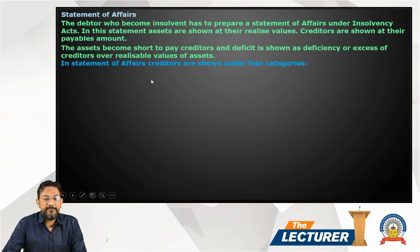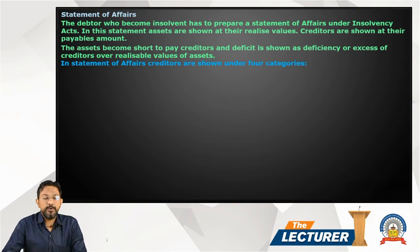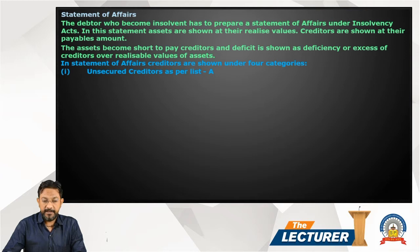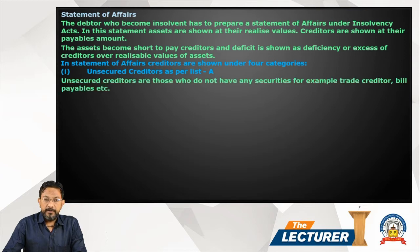The statement of affairs is shown in four categories. First, unsecured creditors as per List A. Unsecured creditors are those who do not have any security — for example, trade creditors, bills of exchange, etc.